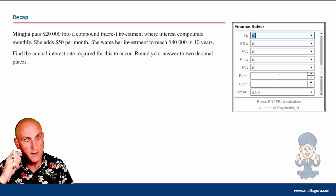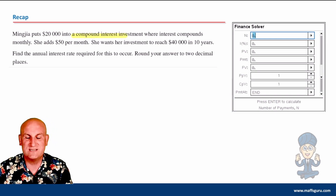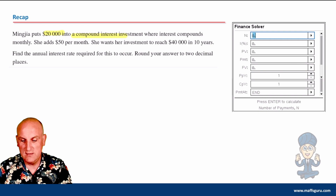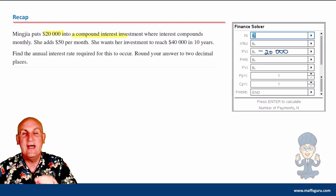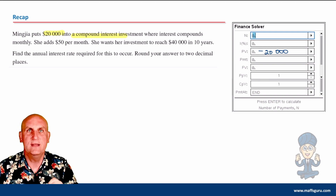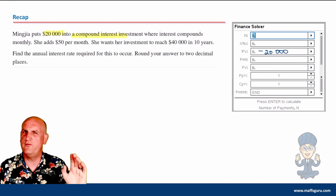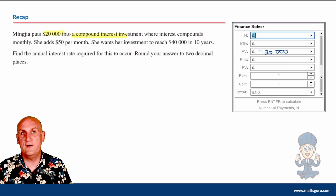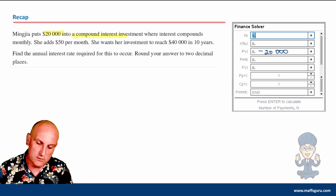First question: Ninja puts $20,000 into a compound interest investment. Compound interest basically just means use your finance solver. She is giving away $20,000 — that makes her feel pretty bad — so that's going to be minus 20,000 as the present value. Getting the plus or minus sign wrong will give you horrible answers. Interest compounds monthly, which tells me that PPY and CPY are both 12.